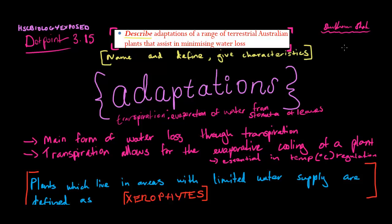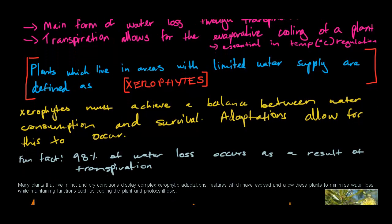First off, I'll define what transpiration means. It means the evaporation of water from stomata of leaves. Now, transpiration is actually the main form of water loss in plants. And you might ask, why do you actually need transpiration in plants? Well, that's because transpiration allows for the evaporative cooling of a plant, which is essential in temperature regulation in pretty much all plants.